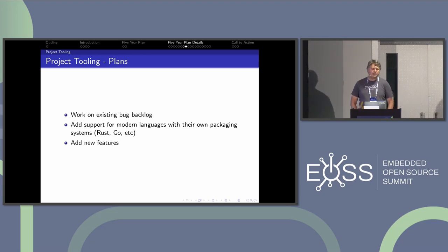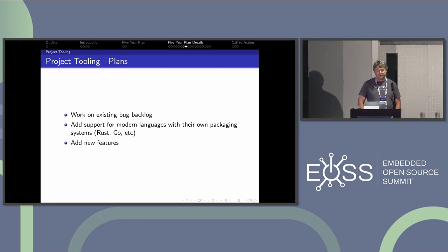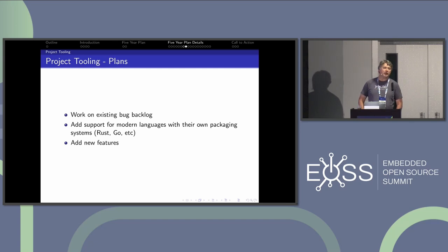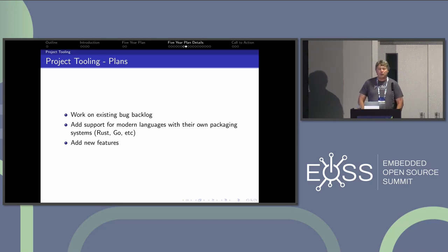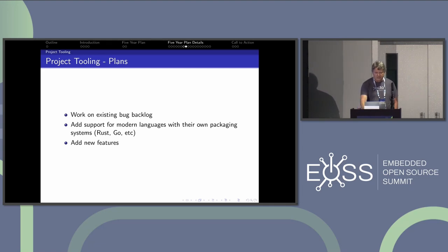The plans for project tooling include addressing the bug backlog for things like RecipeTool and DevTool. Modern languages — Rust and Go — that RecipeTool does not really understand, with their own packaging systems, need to be added. And there are always new ideas for things that can make the project better and easier to use.